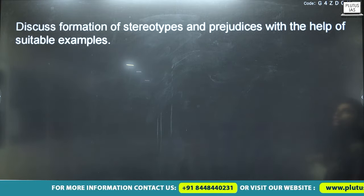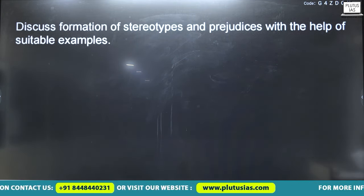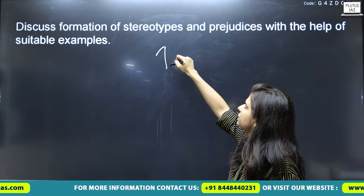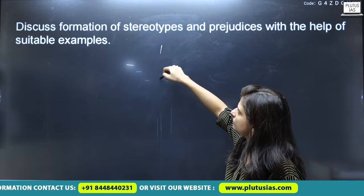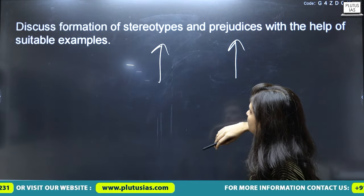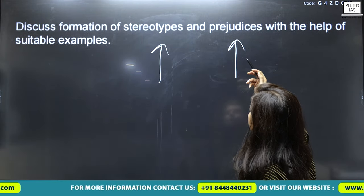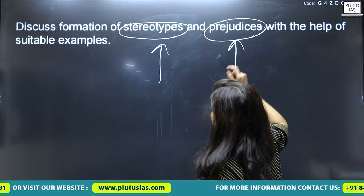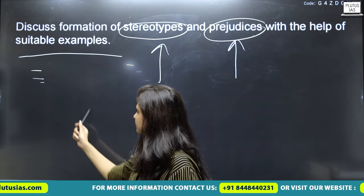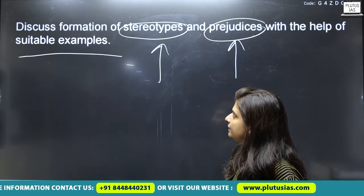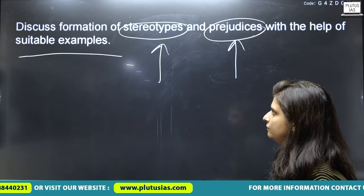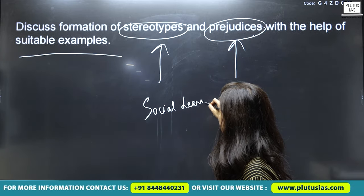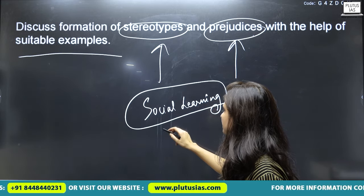The next question is: discuss the formation of stereotypes and prejudices with the help of suitable examples. First, introduce and differentiate stereotypes and prejudices, then discuss how each is formed with suitable examples. For stereotypes, you should write about social learning theory — whatever learnings you have through observation and socialization.